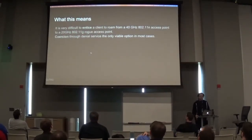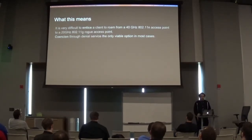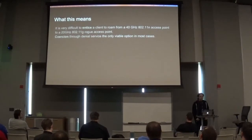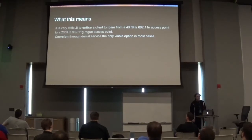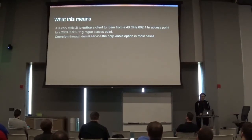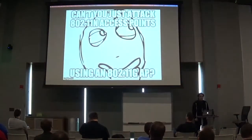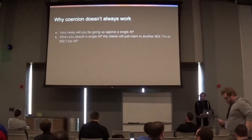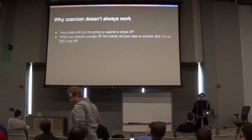We talked about how an evil twin attack essentially involves providing a better signal to a device to get it to connect to you. Well, if you're working with 802.11g capped at 54 megabits per second, and all the access points you're attacking are pumping out at least 300 megabits per second, you're not going to be able to get that to work — not easily, unless you're right up next to the access point. So coercion — deauthenticating an access point and getting it to roam to you — is pretty much your only viable option in most cases these days. Can't you just attack 802.11n access points using an 802.11g access point? Well, yes, you can — and that's where coercion comes in.